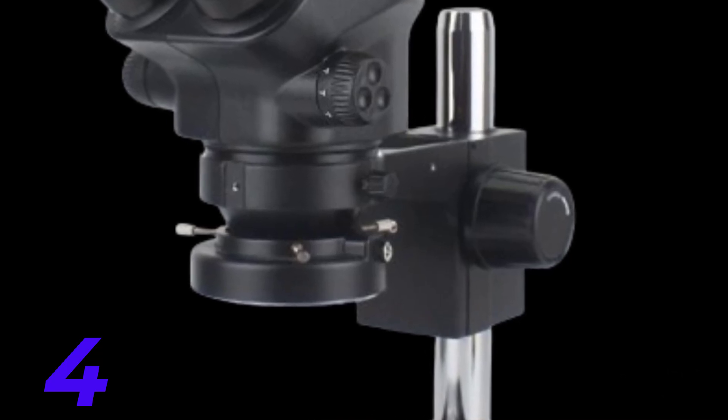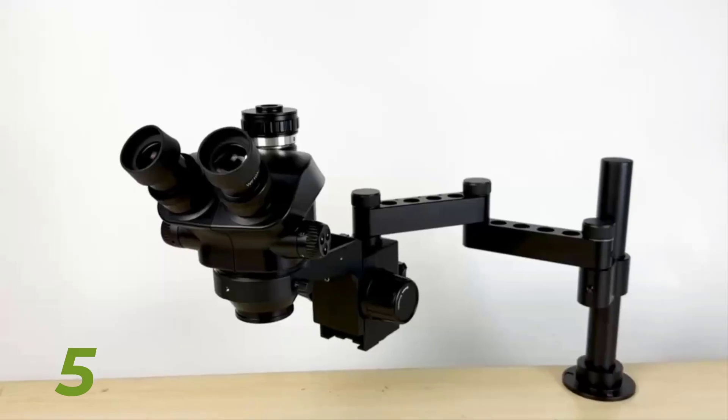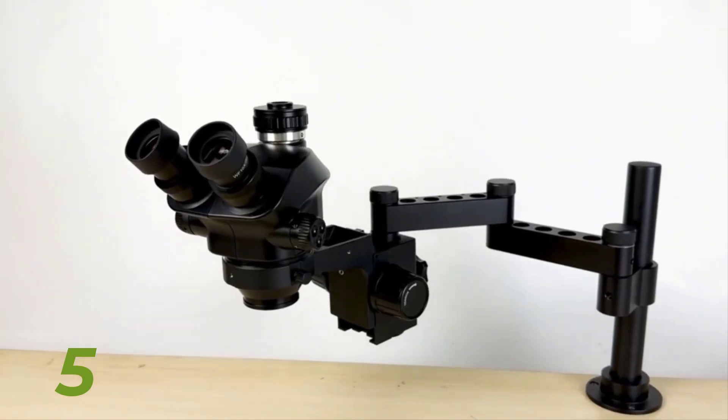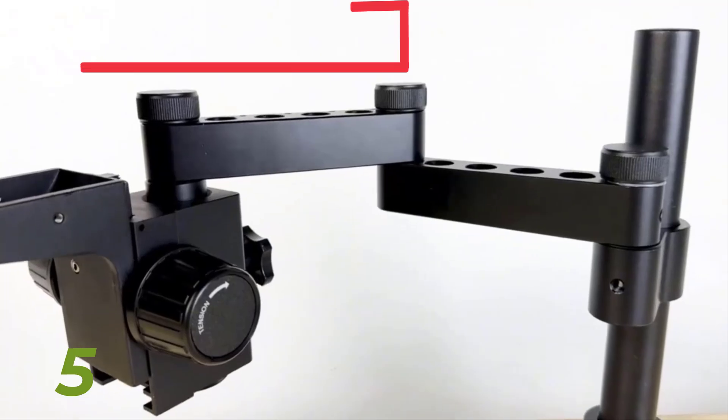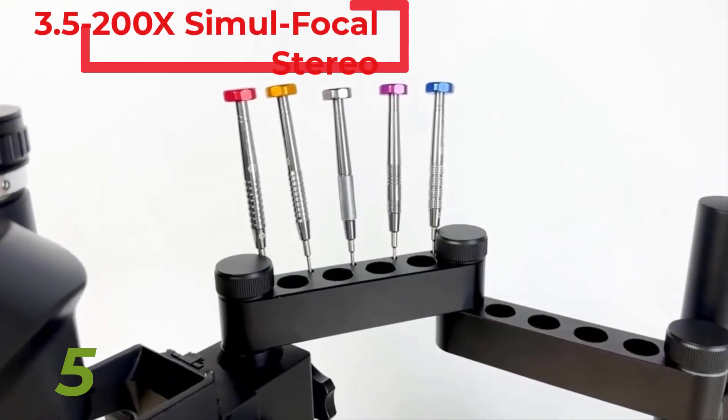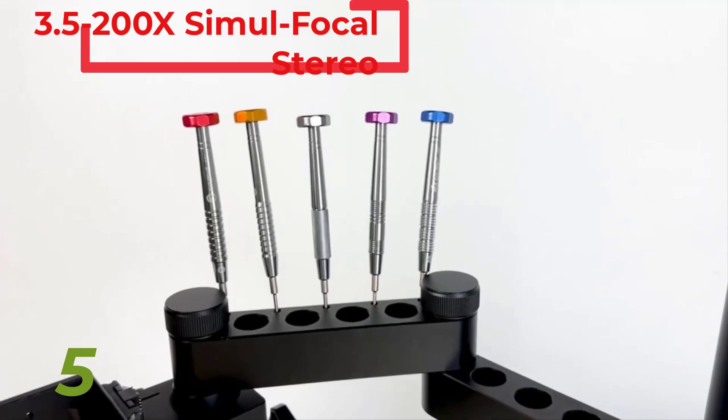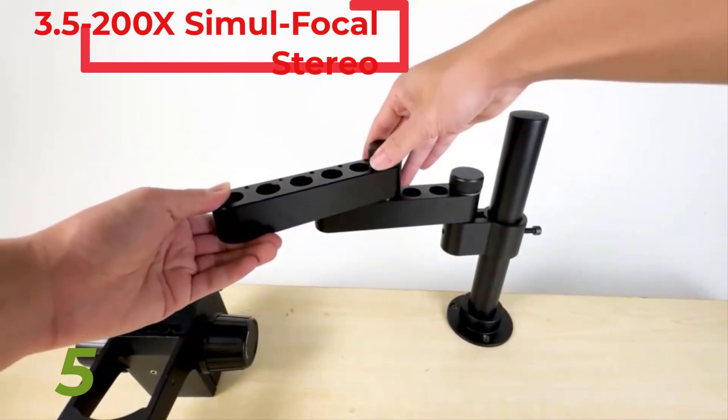The trinocular head allows for simultaneous viewing through the eyepieces and the camera, providing a seamless experience for both observation and documentation. This feature is particularly useful in collaborative settings or when recording observations for later analysis.